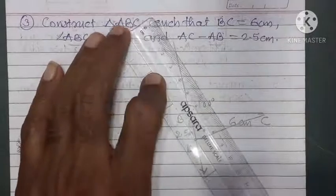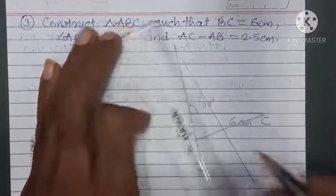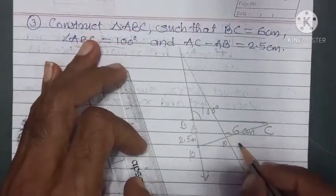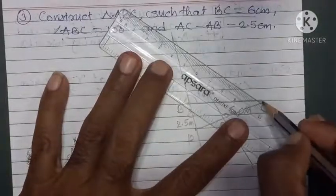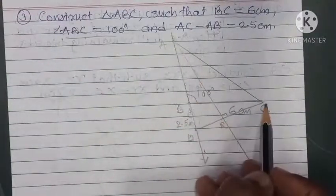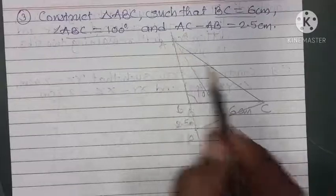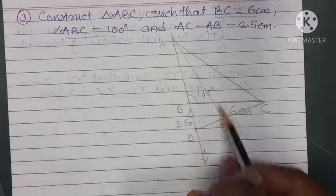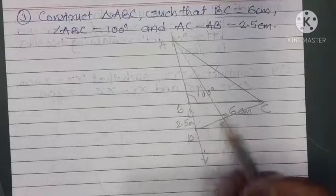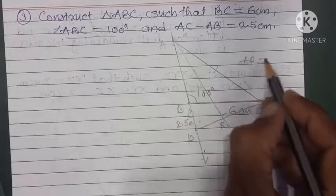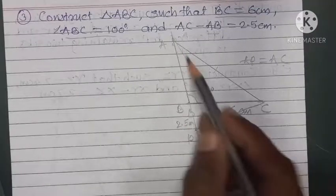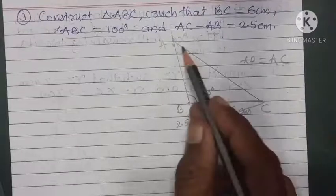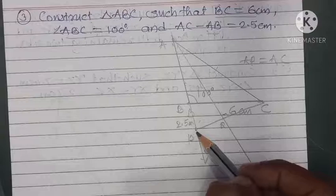Now draw the perpendicular bisector of PC. Where it intersects, give that point the name A, and join A to C. Now AC is greater and AB is smaller. The perpendicular bisector of PC gives AP equals AC. So AP minus AB = 2.5, and since AP = AC, we get AC minus AB = 2.5. This is the analytical figure for the second type of construction.